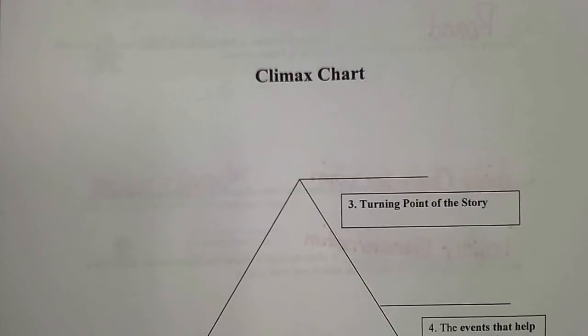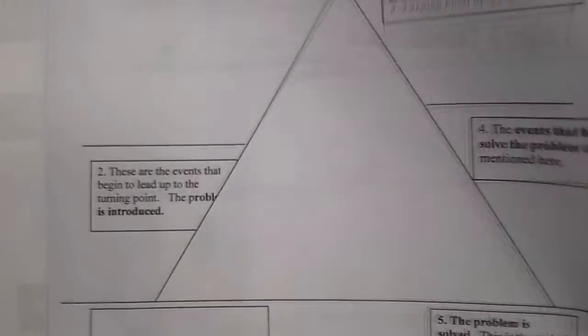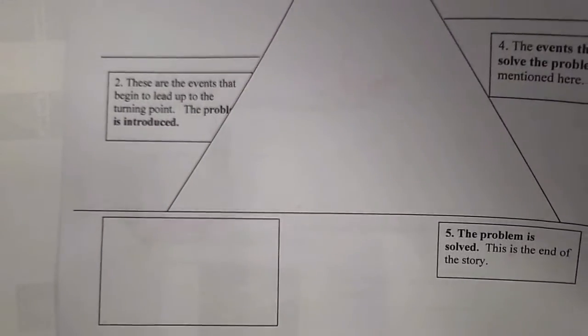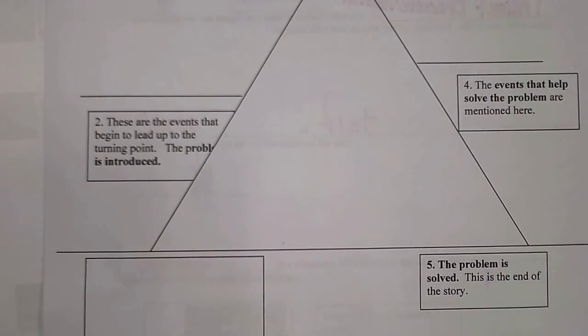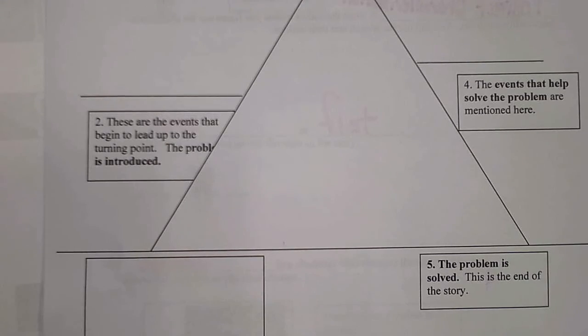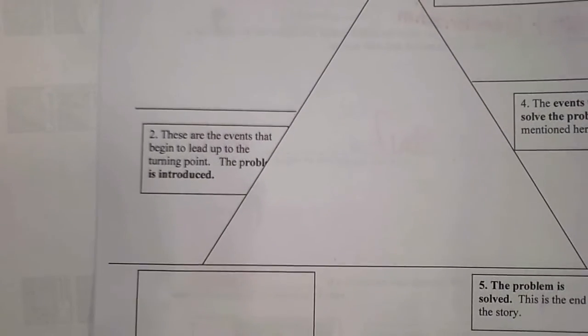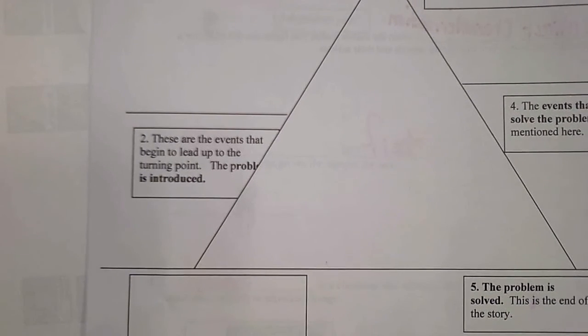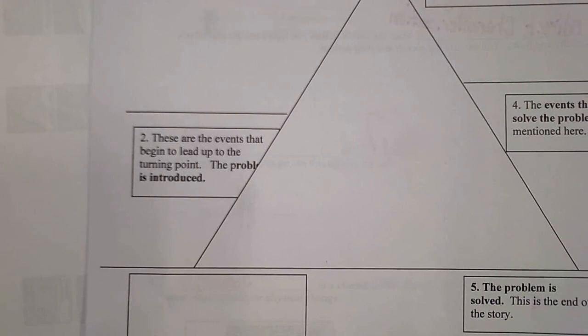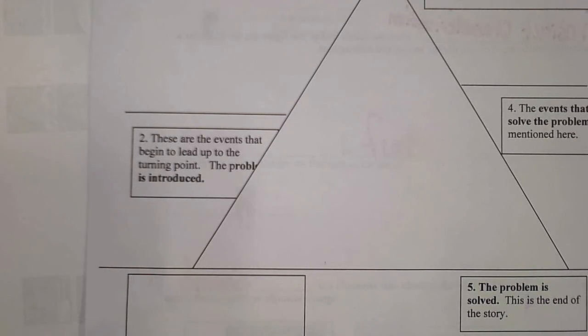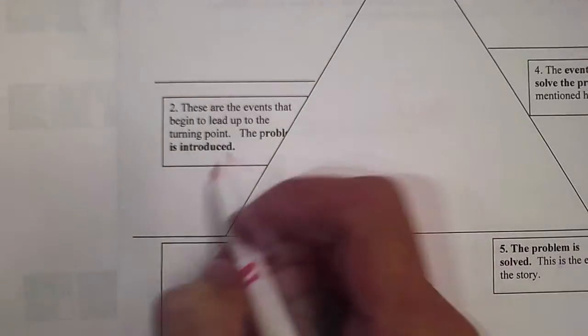We're on to one more page - the climax chart. The climax chart is basically how we create the story; it's the events that make up the story. We start on the left, and if you think about going up a mountain, it increases. Same with the story - as we get farther into the story, the events and action get more intense and interesting. Down at the bottom on the left side, we start with exposition.